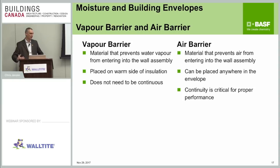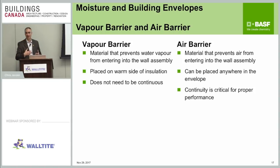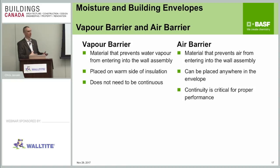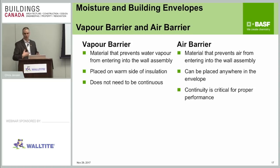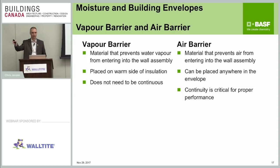An air barrier is basically to prevent air from entering the wall assembly, and it can be placed anywhere in the building envelope — it doesn't need to be on the warm side. But continuity is critical, and not just on the wall — how you tie it into the foundation and especially into the roof assembly is very important. There's often confusion about who's responsible for tying the wall air barrier to the roof — the roofer or the wall contractor. From a water-shedding standpoint, it makes a lot more sense for the roofer to tie into the wall membrane, lapping their system down over the top of the wall.